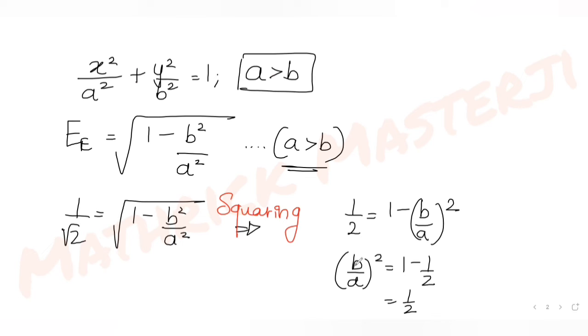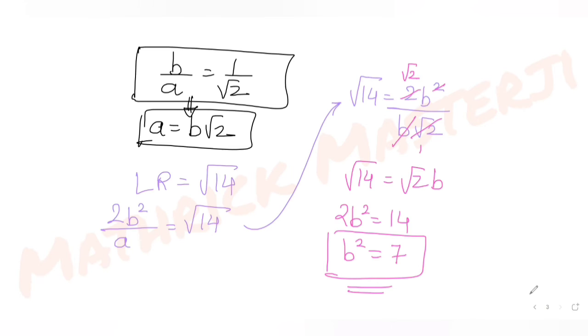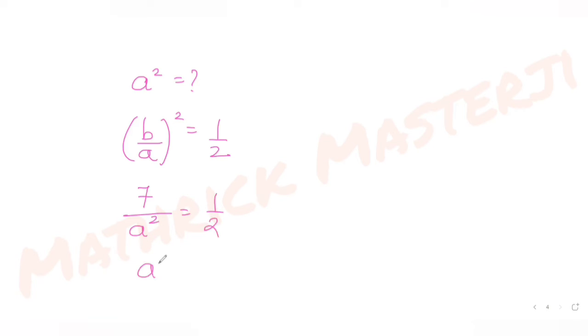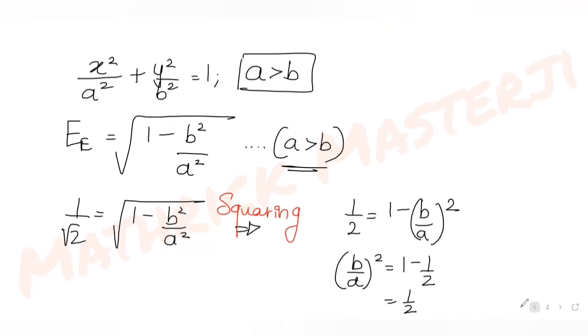Since (b/a)² = 1/2, we have b²/a² = 1/2. With b² = 7, we get 7/a² = 1/2, so a² = 14. Now we have both a² = 14 and b² = 7.